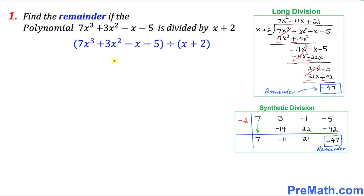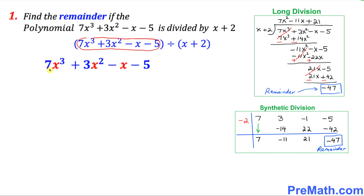Now you might be wondering: is there any easy way of doing this problem to find the remainder other than these two methods? Yes, there is another method — let me show you that one. Look at this dividend part: 7x³ + 3x² − x − 5. I put down that dividend right here, and now I want you to look at the divisor, specifically the positive 2.